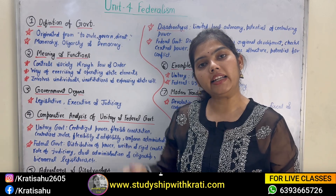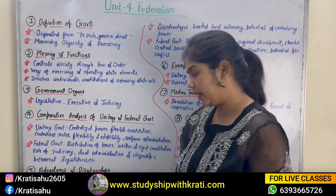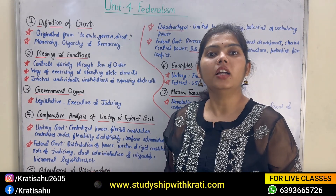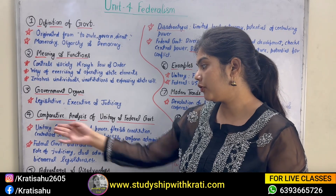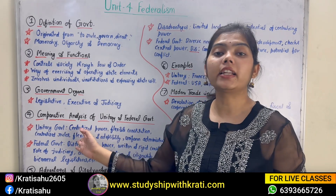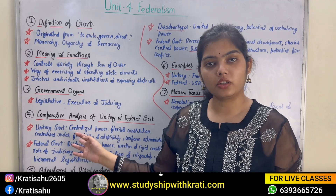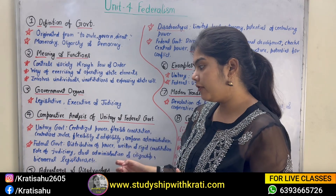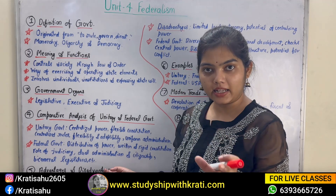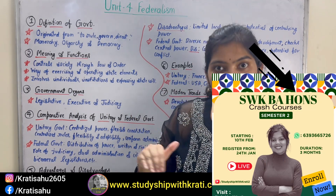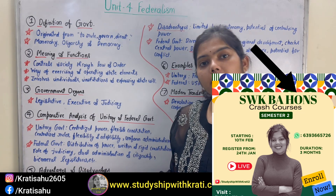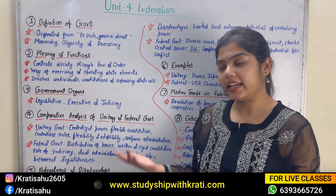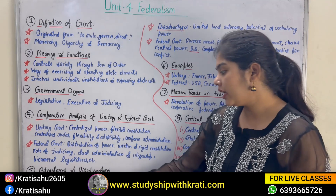In federal government, there is a written and rigid constitution. We can take India as an example of federal. The role of the judiciary is very active because if there is a conflict between central and state, someone has to resolve it. Dual administration exists — at central level, state level, and local level. Distribution of power is there but in dual administration, they are quite independent to make decisions. Bicameral legislature exists — for example, in India we have Lok Sabha and Rajya Sabha. In unitary countries like Britain, they also have Parliament with two houses — House of Commons and House of Lords.